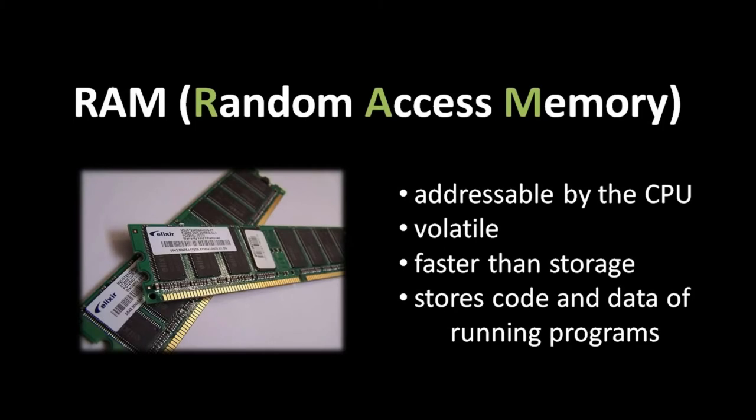Of all the components in the system, the RAM — the system memory — is the simplest. RAM is really just a big bucket for storing bits, and as far as the CPU can see, these bits are organized into bytes, each with its own address, a numeric value that uniquely identifies that byte. The first byte has the address 0, the second byte has address 1, the third has address 2, and so on, all the way up to the last byte.